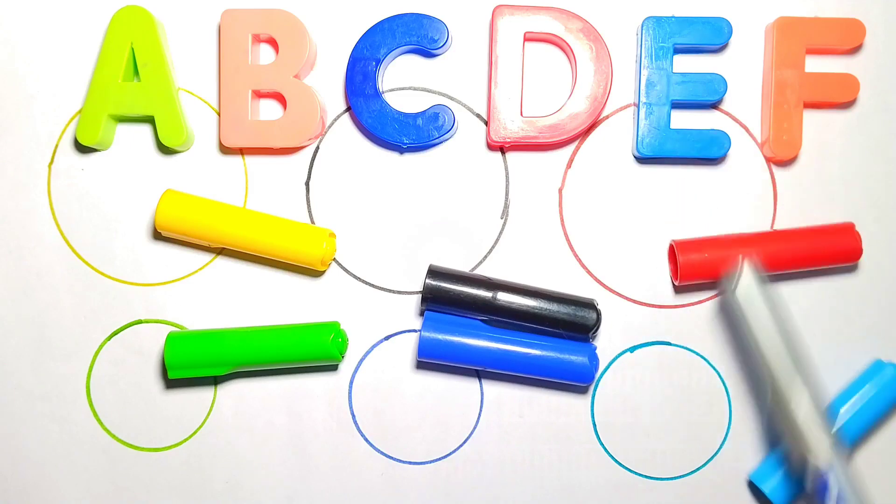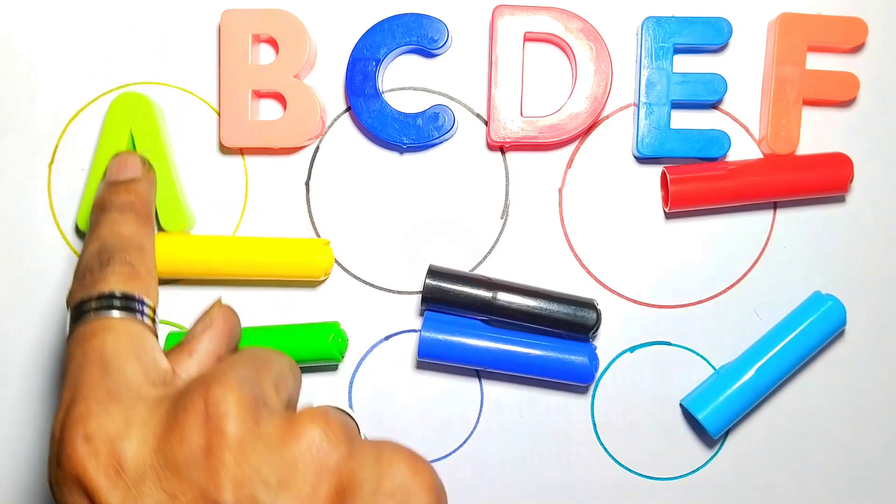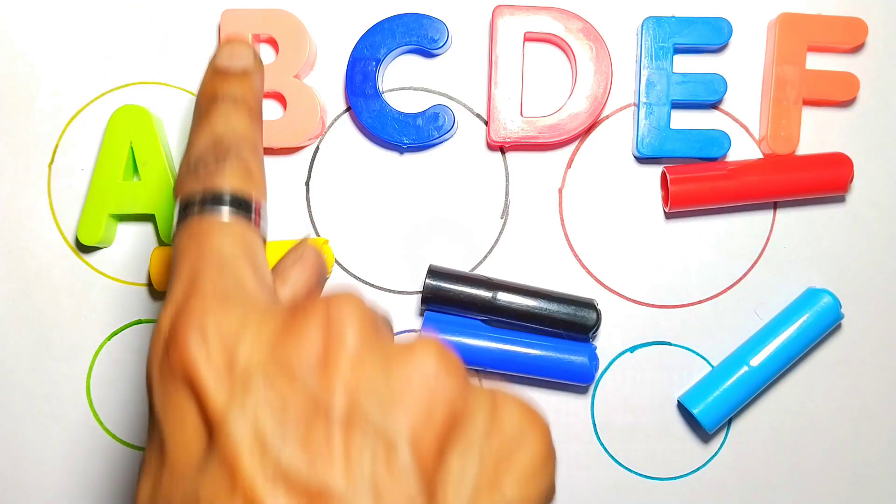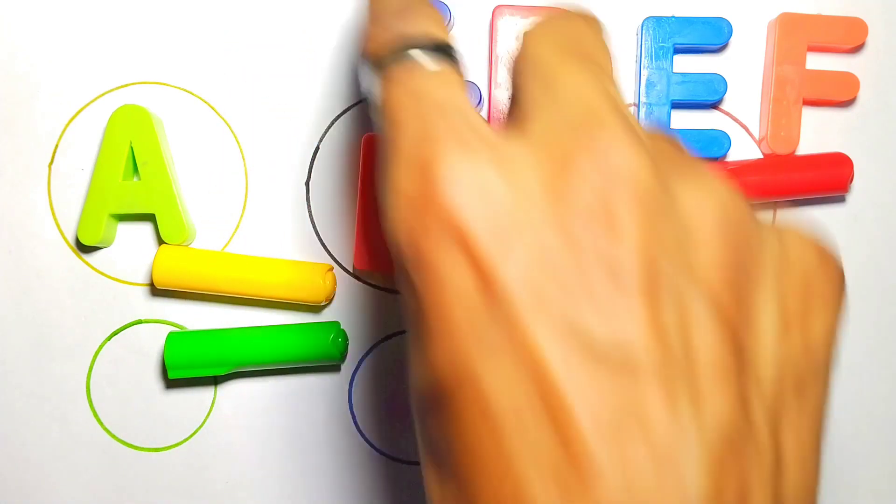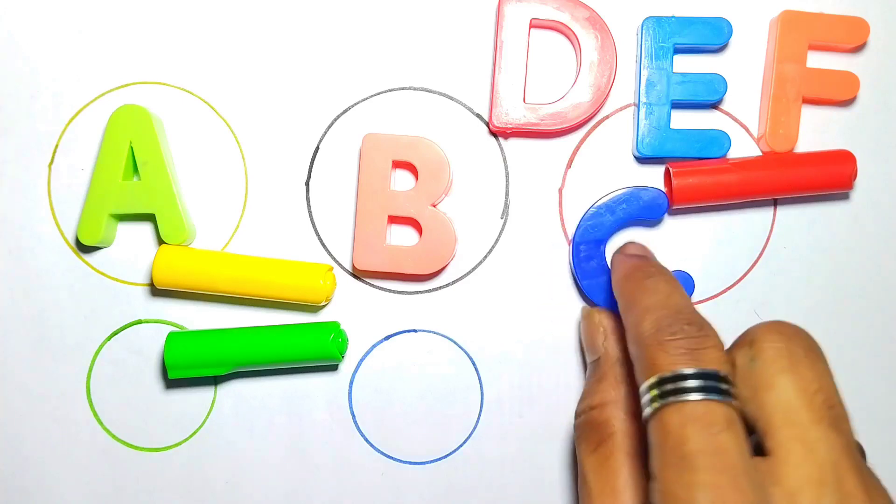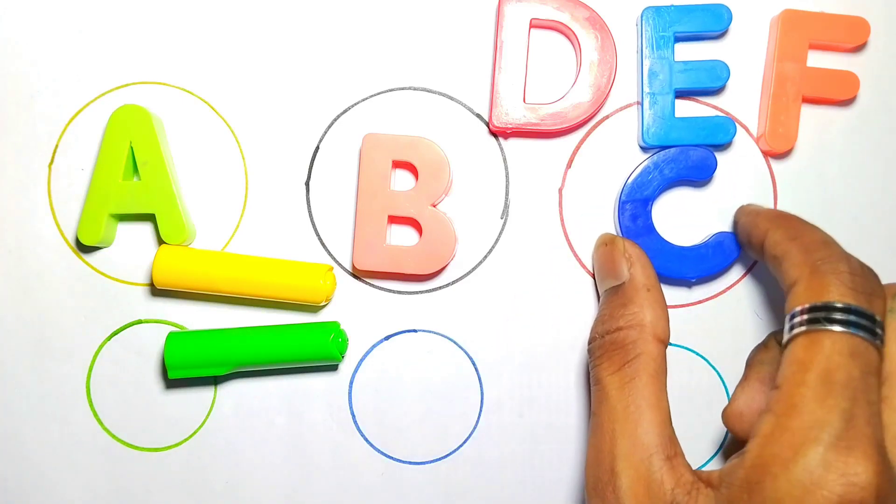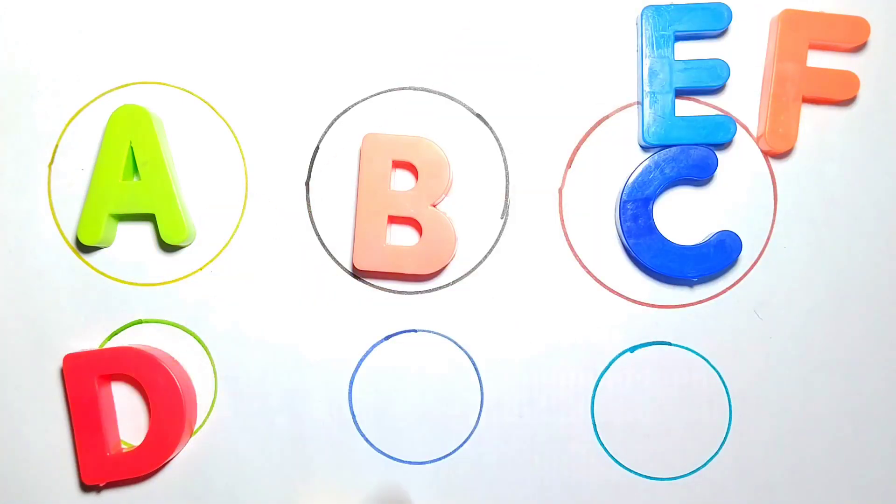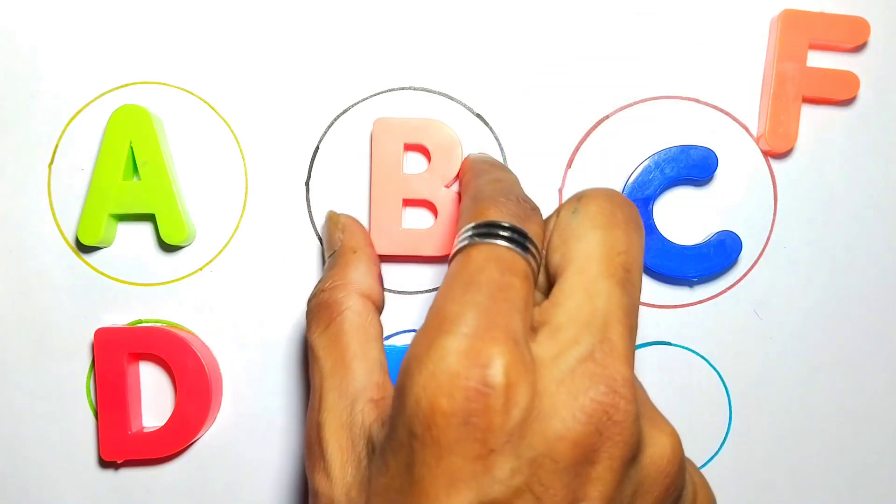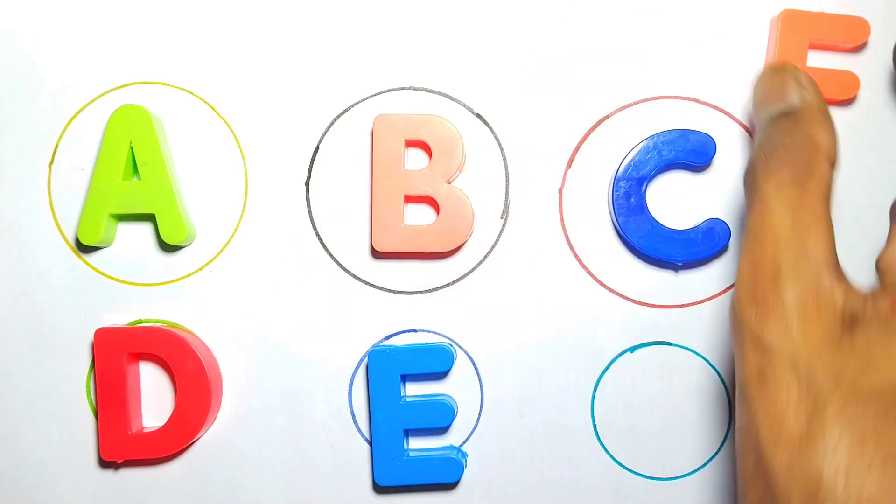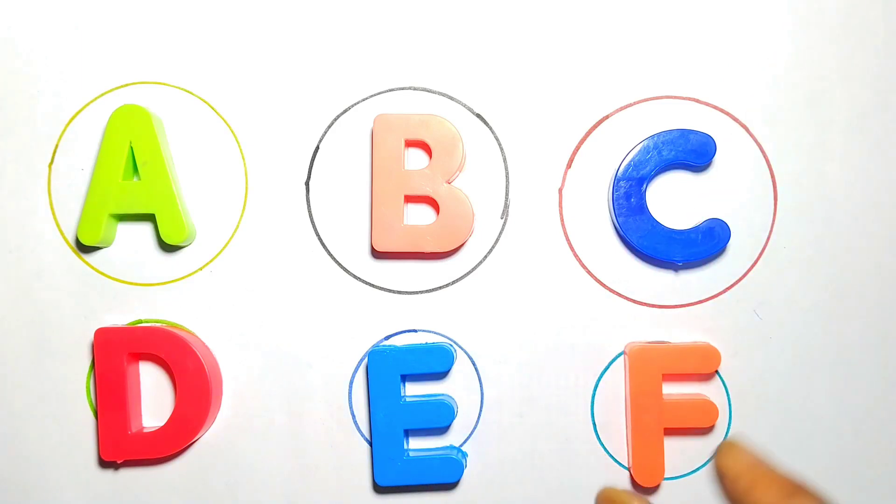Today we are learning alphabets. A, A for Apple. B, B for Ball. C, C for Cat. D, D for Dog. E, E for Elephant. F, F for Face.